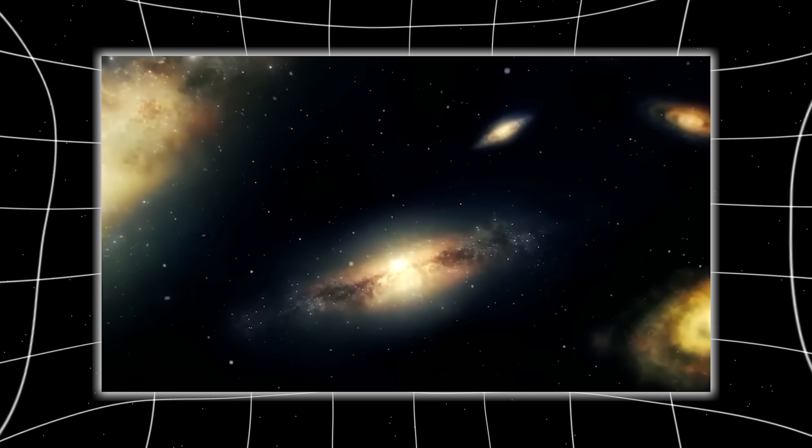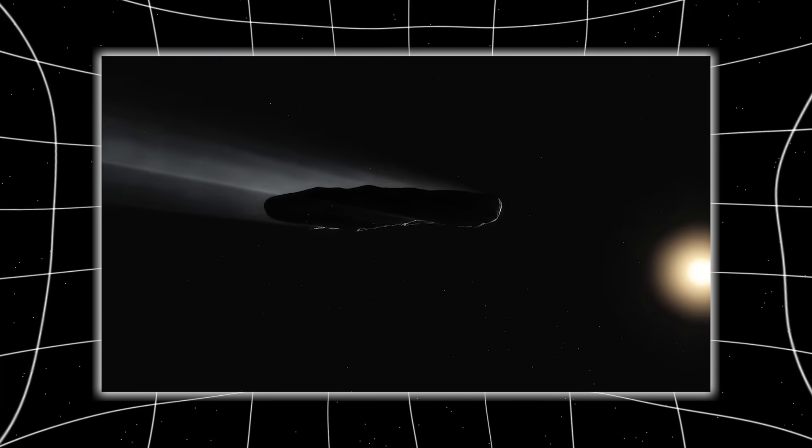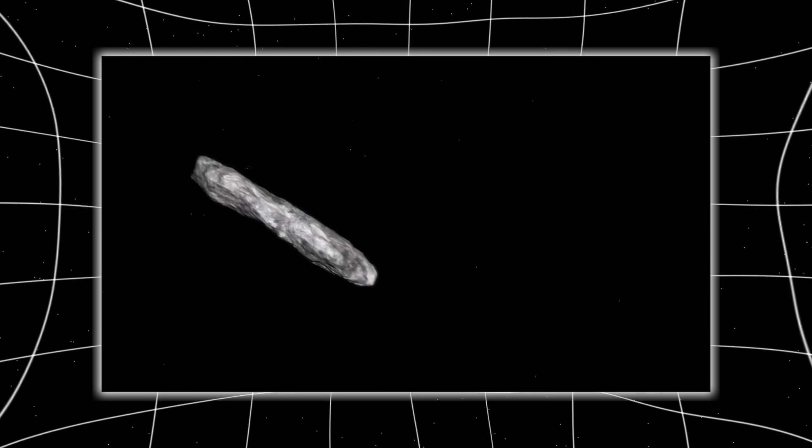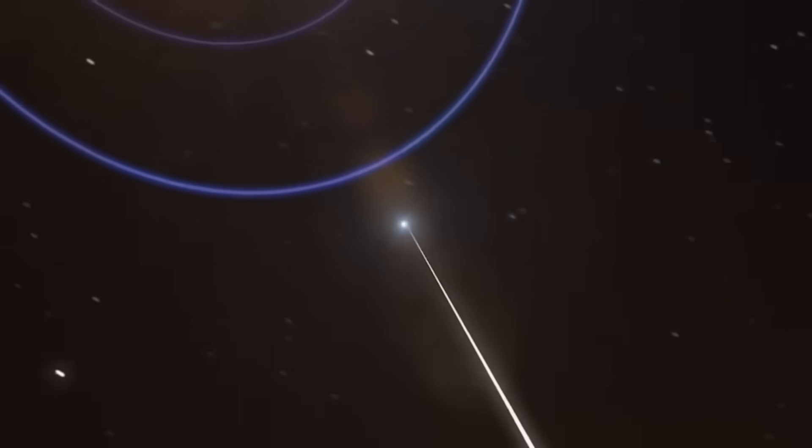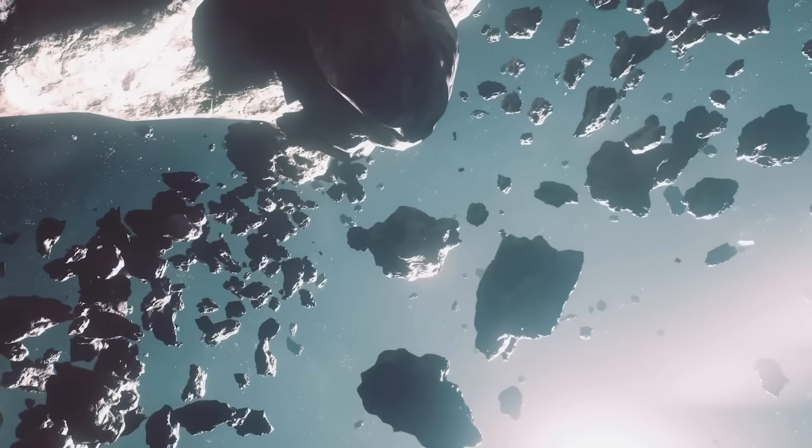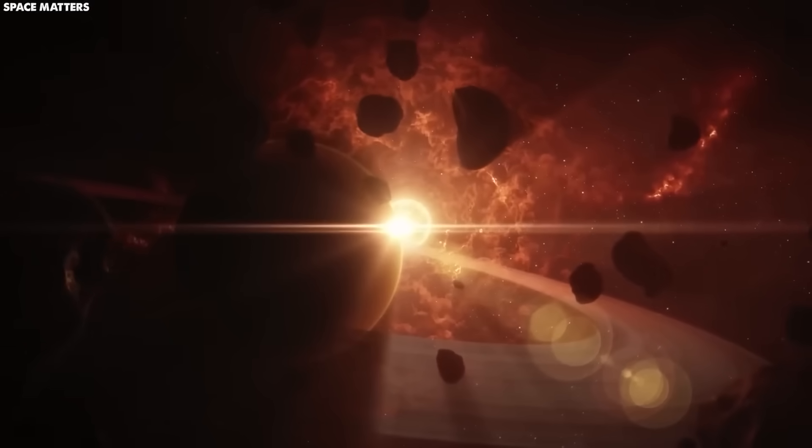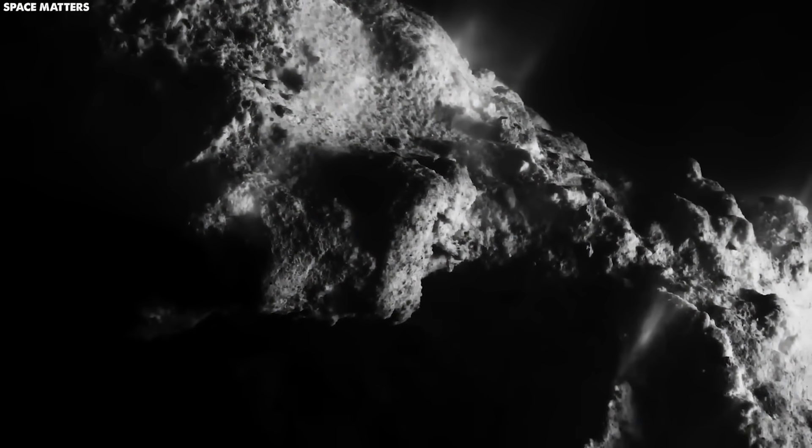That alone placed it among the rarest objects ever discovered, only the third interstellar visitor humanity has ever confirmed after Oumuamua and Borisov. But unlike them, its trajectory was unsettling in its precision. It aligned itself to sweep near the orbits of Jupiter and Mars before slingshotting around the sun, timed perfectly so that Earth would be on the opposite side when it made its closest approach. To some scientists, this was a coincidence. To others, it looked like avoidance.